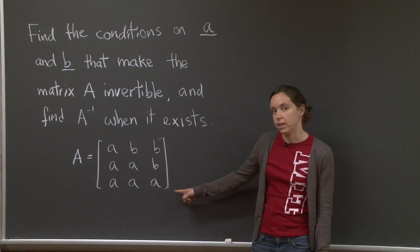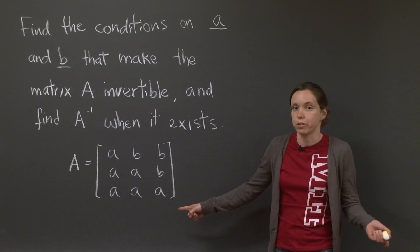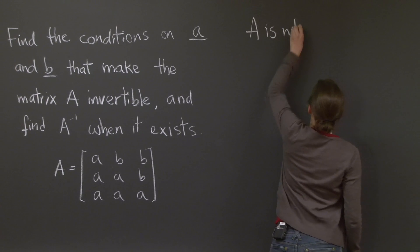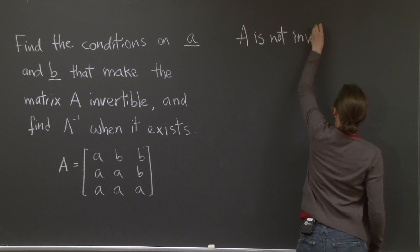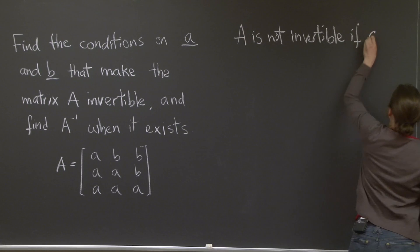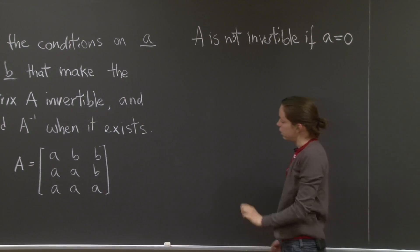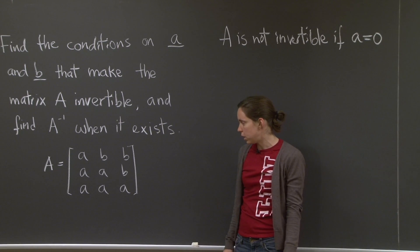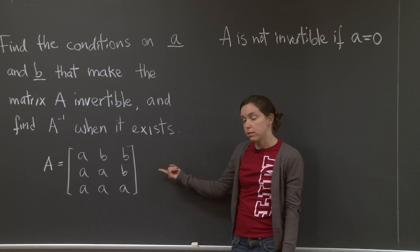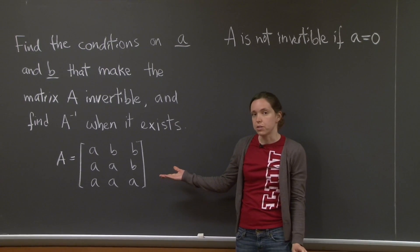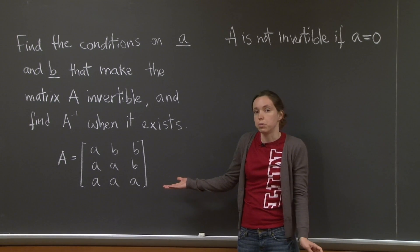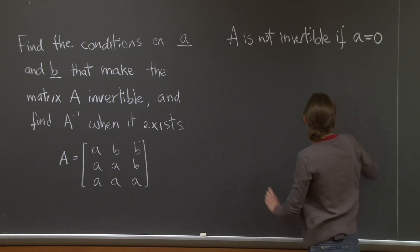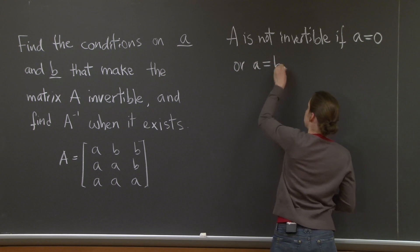Well, here you have a row of a's. If a is equal to 0, you have a row of zeros. The matrix is not invertible. So what was the other one? Two of the same column or of the same row. Well, if a is equal to b, then all the entries in the matrix are the same. So all the rows are the same or the columns are the same. The matrix is not invertible. So that's the other easy condition. A is not invertible if a equals 0 or a equals b.